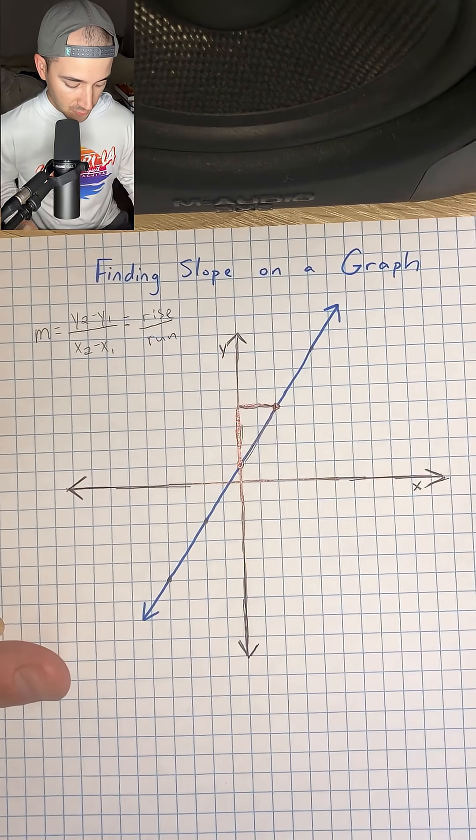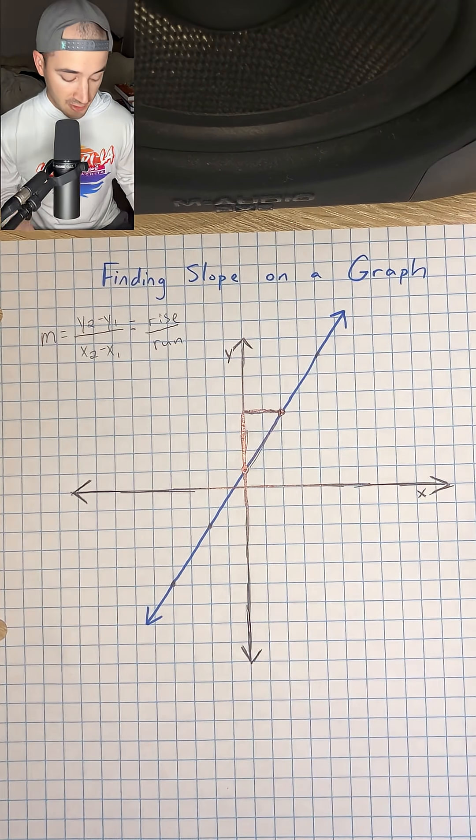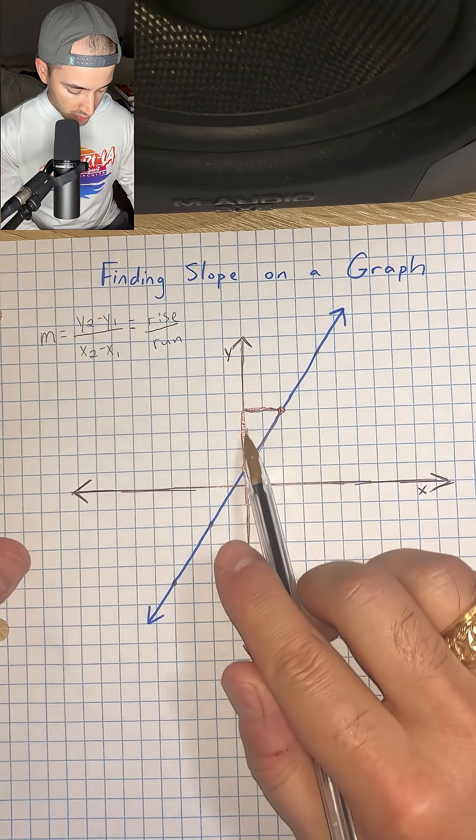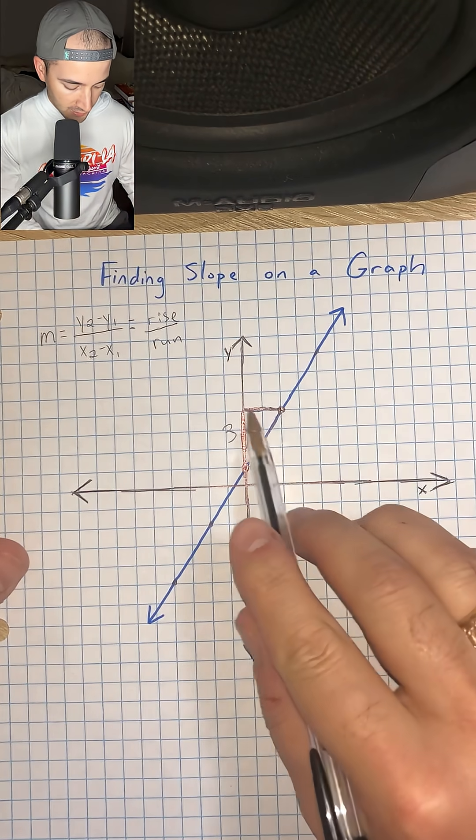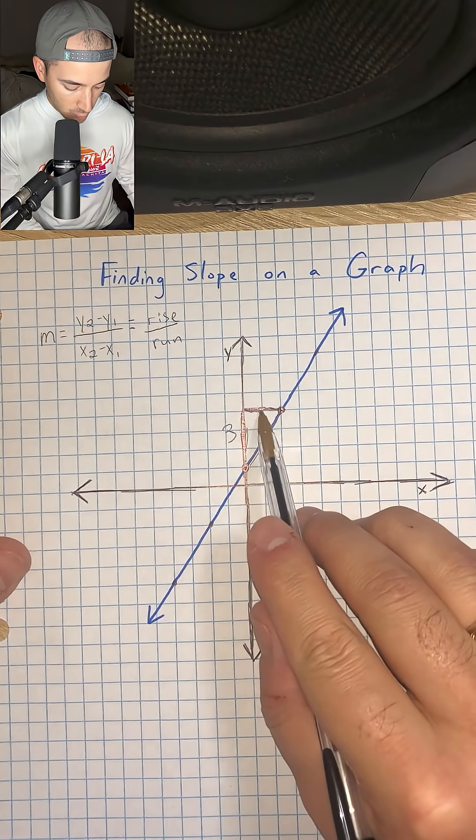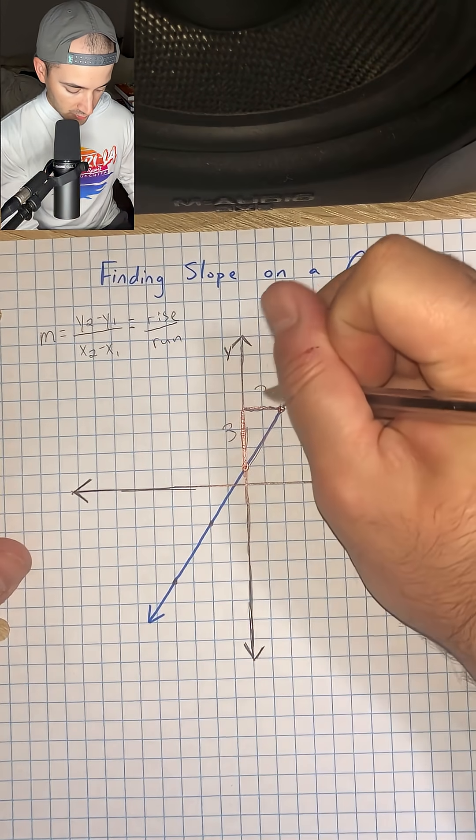So let's go ahead and label our rise and our run. So our rise, we went up 1, 2, 3, so I'm going to put a 3 there.